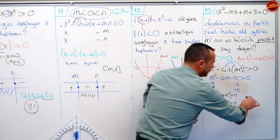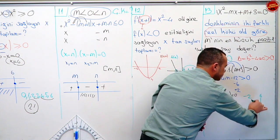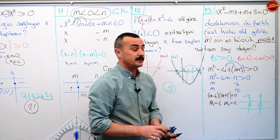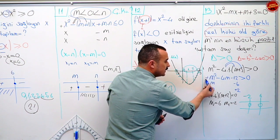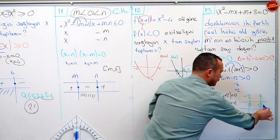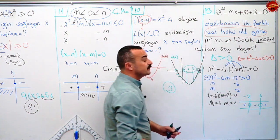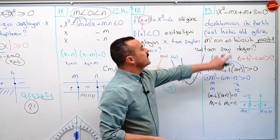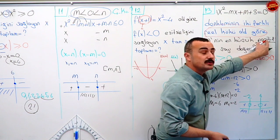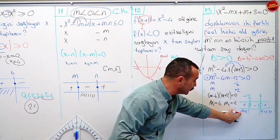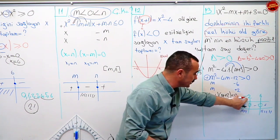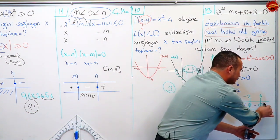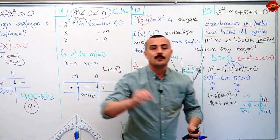Hemen tablomuzu yapalım. Bir kökü eksi iki, bir kökü altı. Eşitlik olmadığı için içlerini boş bırakıyorum. m'ye çözüm yaptığımız için m'nin en büyük dereceli terimin işareti artı. Artı, eksi, artı. Sıfırdan büyük olduğu yerleri istiyor. M'nin en küçük pozitif tam sayı değeri: bu taraftaki sayılar eksi sayılar olduğu için almayacağım. Sağlayan en küçük pozitif tam sayı, altıya eşitlik yok. O zaman yedi sorumun cevabı olmuş olacak.